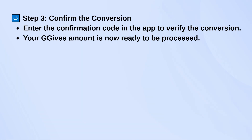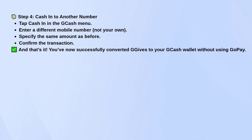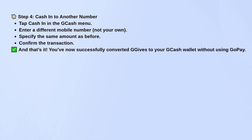Now here's the key step. Go back to the G-Cash dashboard and tap on CashIn. This time, instead of using your own number, enter a different mobile number — make sure it's someone you trust, or a secondary account you own. Enter the same amount you just converted. Once that goes through, you can either transfer it back to your main G-Cash number or use it from the alternate account.